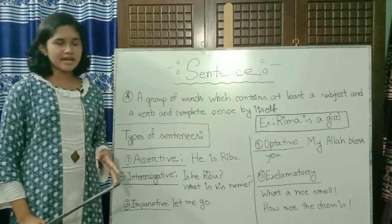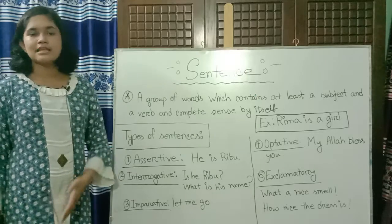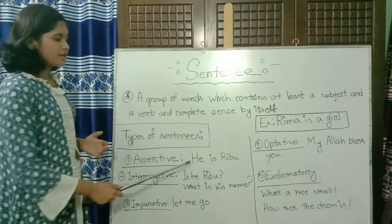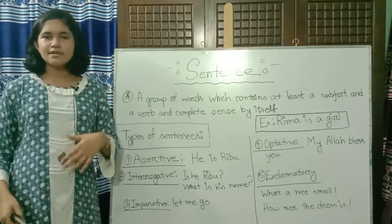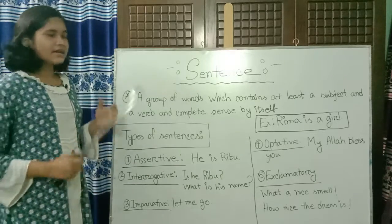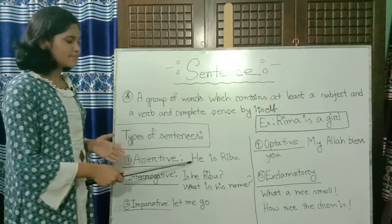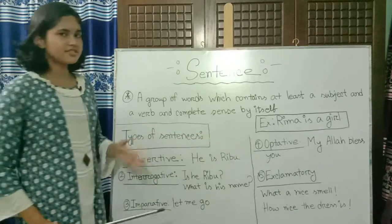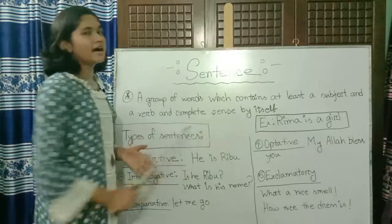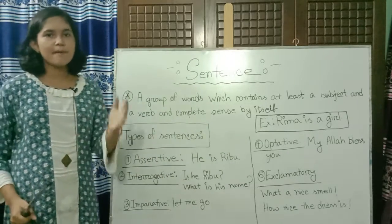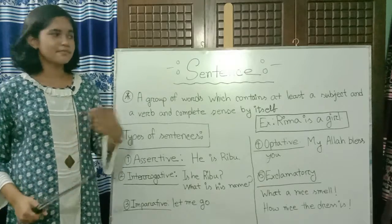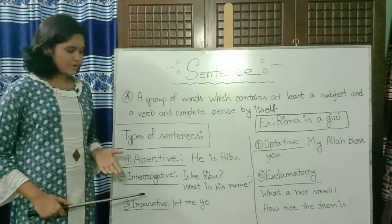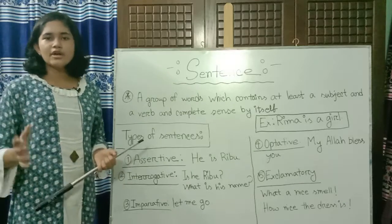Let's learn some examples of assertive sentences. We can say 'He is Ribu' — that means the boy's name is Ribu, indicated by 'he.' Another example: 'Rima is a girl' — Rima is a person and she is a girl, indicating her gender. These are assertive sentences.